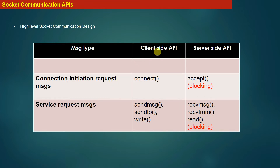On the client side, the API we discussed is the connect system call, which is used by the client to send the connection initiation request message to the server. The corresponding API to process that request is the accept system call. The connect system call is not a blocking system call, but the accept system call is a blocking system call. Connect and accept are actually complementary to each other — the connection initiation request generated by connect is processed on the server side by accept.